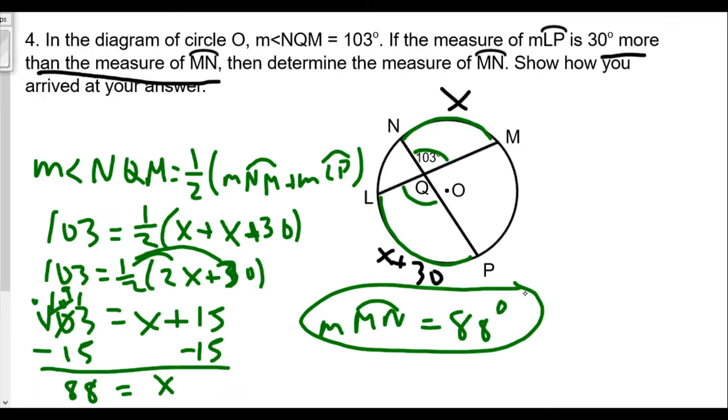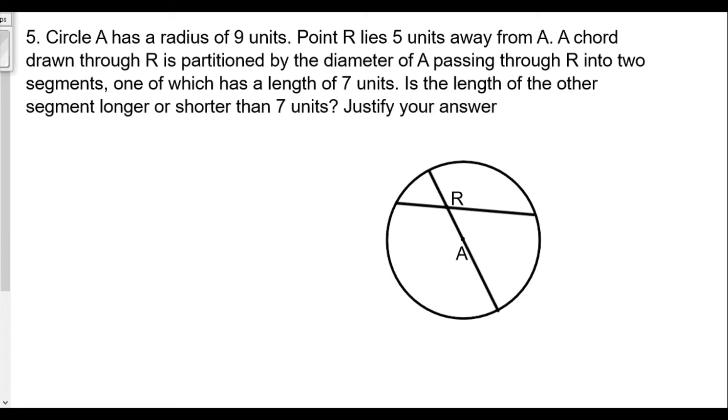Now let's do question number five. You had to draw your diagram here. Circle A has a radius of nine units. Point R lies five units away from A. A chord drawn through R is partitioned by the diameter of A passing through R into two segments, one of which has a length of seven units. Is the length of the other segment longer or shorter than seven units?